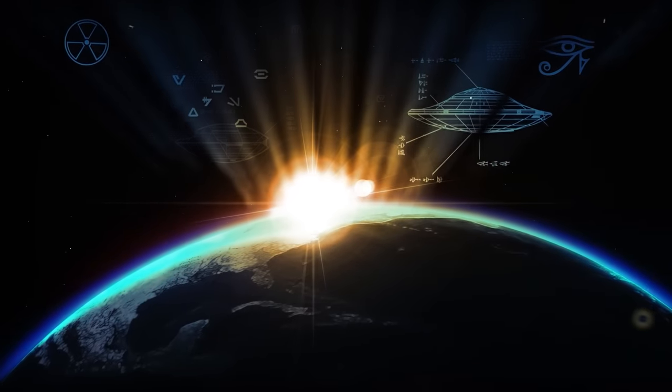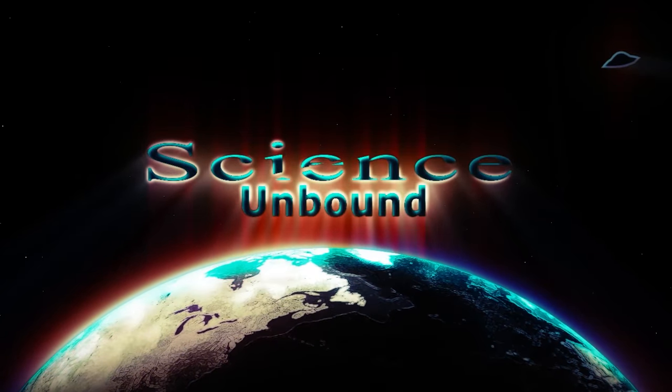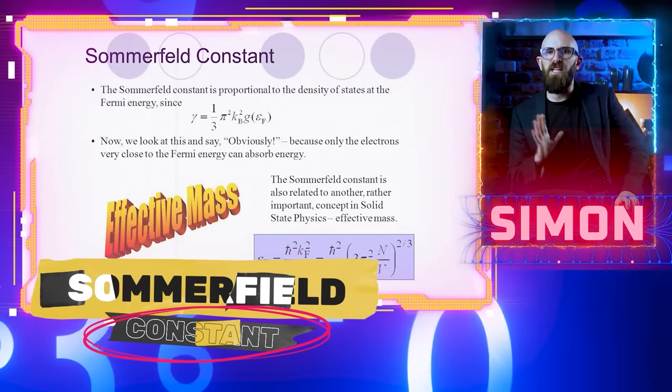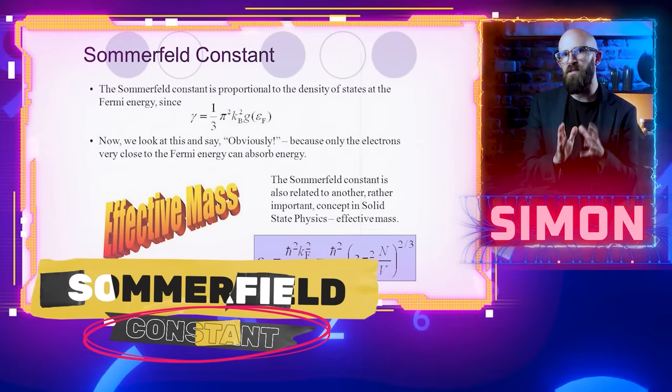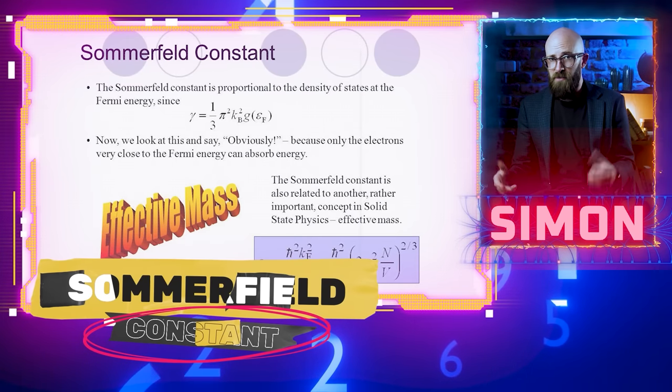So what exactly is 1/137th? How was it discovered? Why is it so damn important? The fine structure constant, also known as the Sommerfeld constant, is a fundamental constant of physics that quantifies the strength between charged particles and the electromagnetic force.